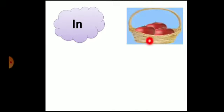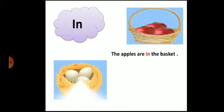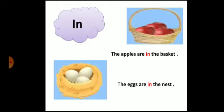The first preposition is 'in'. 'In' shows that something is inside another thing. Can you see where the apples are? The apples are in the basket. So 'in' shows the position of the apples — the word 'in' is a preposition. Now, where are the eggs? The eggs are in the nest. So 'in' is the preposition.